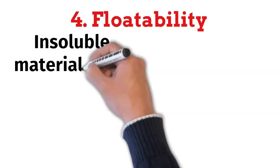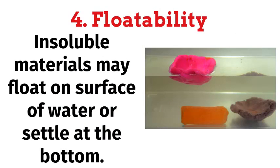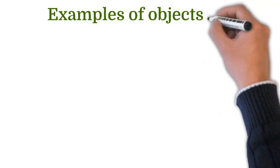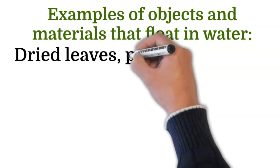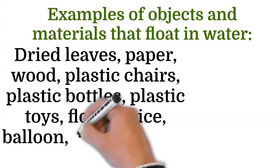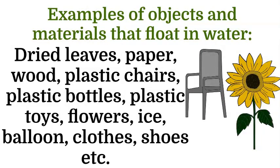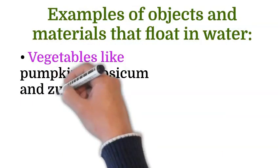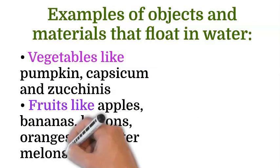Fourth, the floatability. Insoluble materials may float on the surface of water or settle at the bottom. Examples of objects and materials that float in water are dried leaves, paper, wood, plastic chairs, plastic bottles, plastic toys, flowers, ice, balloon, clothes, shoes, etc. Vegetables like pumpkin, capsicum, and zucchini. Fruits like apples, bananas, lemons, oranges, and watermelons.